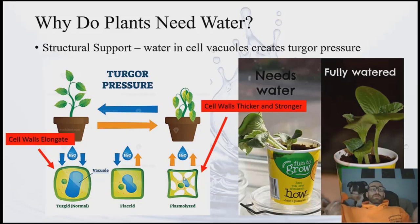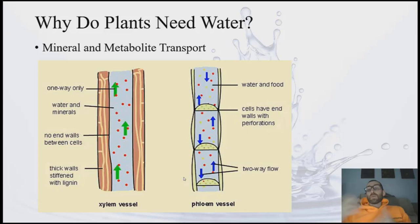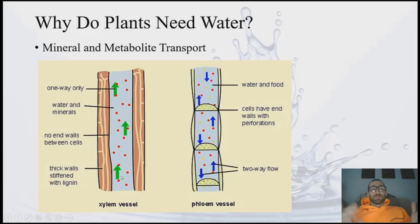Water makes up about 90% of your plant, so it's very important for structural support. It is also used for mineral and metabolite transport. Your plants have a vascular system which transports both water, minerals, and photosynthate or sugars — you can think of it like your circulatory system with veins and arteries. In order for minerals or sugars to make their way through the plant, they need to travel through the xylem or phloem vessels and through the water flowing there.